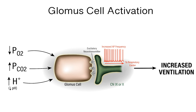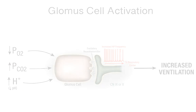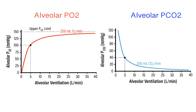Those increased action potentials travel to the respiratory center within the medulla, resulting in an increase in alveolar ventilation. Let's consider why an increase in ventilation is an appropriate compensatory response for these blood gas changes. Recall the relationships between alveolar ventilation and partial pressures of oxygen and carbon dioxide. If the partial pressure of oxygen is low, in order to increase the arterial partial pressure of oxygen, we need to increase alveolar ventilation.